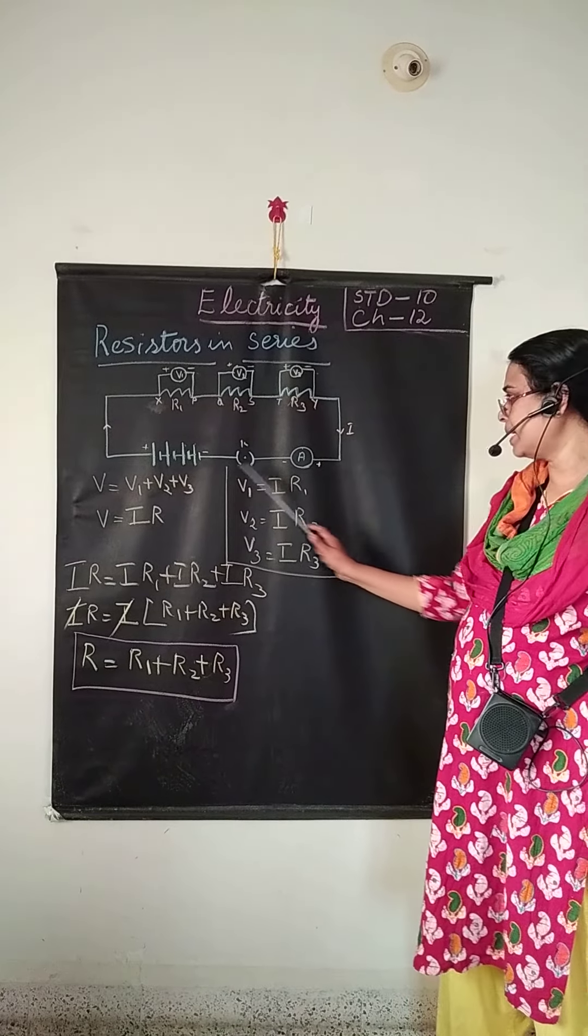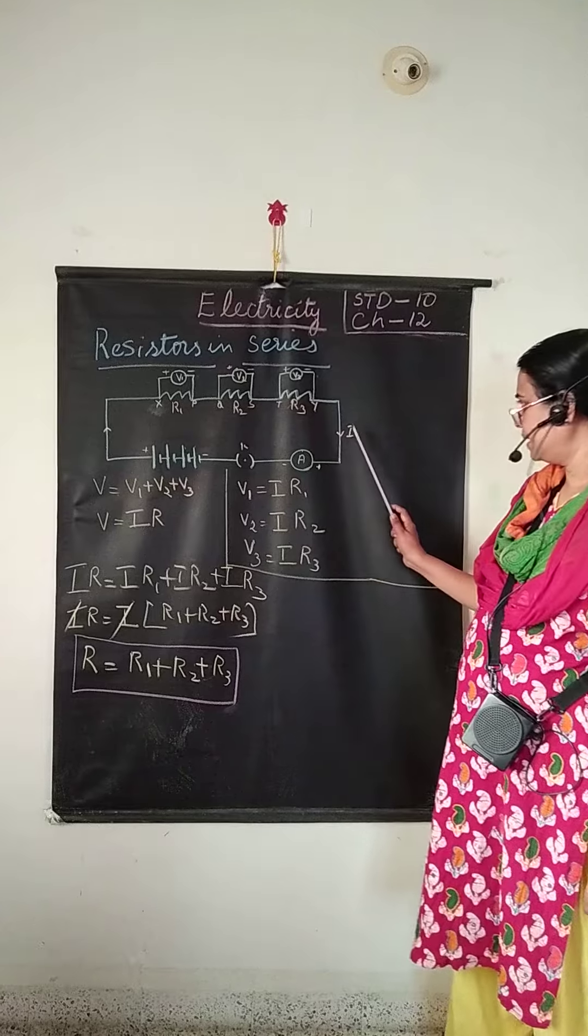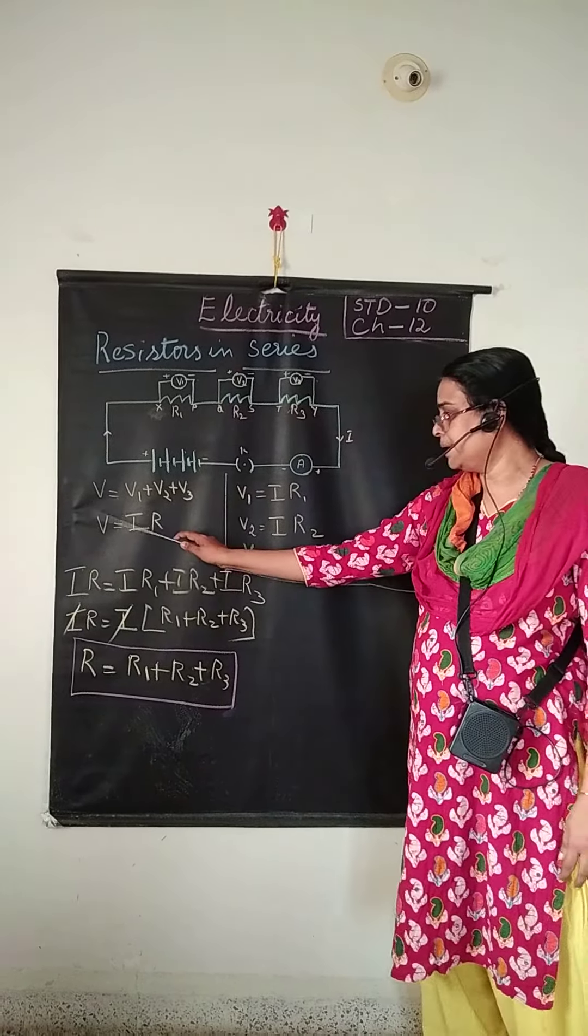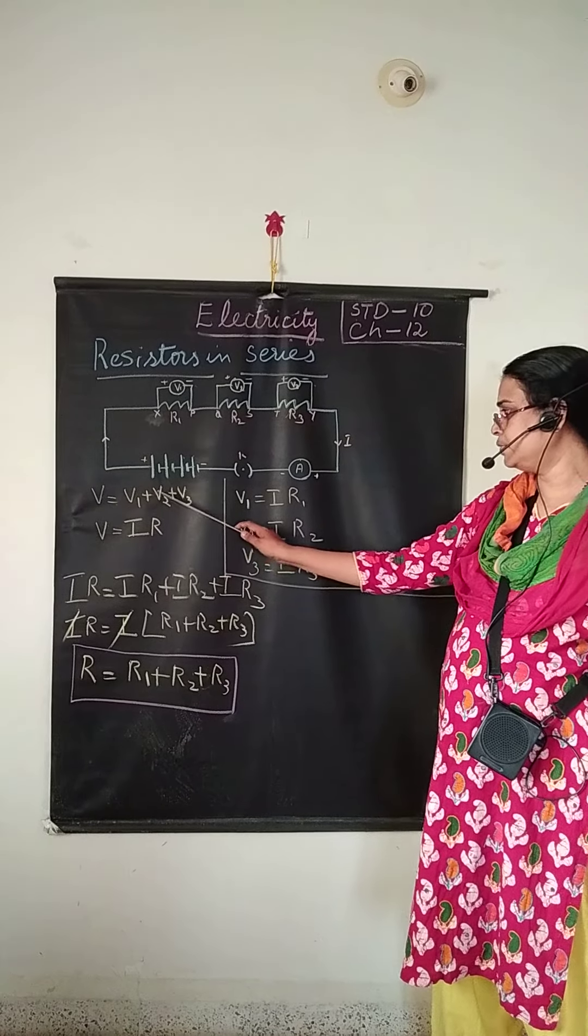Now the current which is passing through the conductor is same. The total potential difference V can be calculated as V1 plus V2 plus V3.